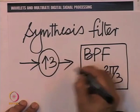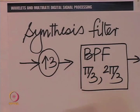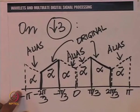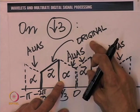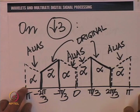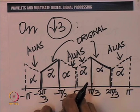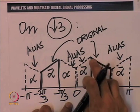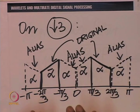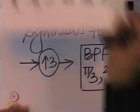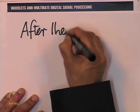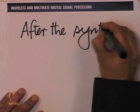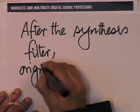The synthesis filter retains the original and throws away the alias. On down-sampling, the spectrum is scaled by 1/3 on the vertical and expanded by a factor of 3 on the horizontal; on up-sampling by 3 it contracts again. So after down-sampling by 3 and up-sampling by 3, we come back to the original spectrum except with a scaling factor of 1/3. After the synthesis filter, the original is again retained and the alias is removed.